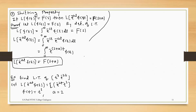The shifting property tells us: if the problem is of the form e raised to minus a·t into f(t), first calculate the Laplace of f(t), which is F(s). Then the Laplace of e raised to minus a·t into f(t) is F(s+a) — that is, replace s with s plus a. So first we calculate the Laplace of f(t), where f(t) is t raised to 3.